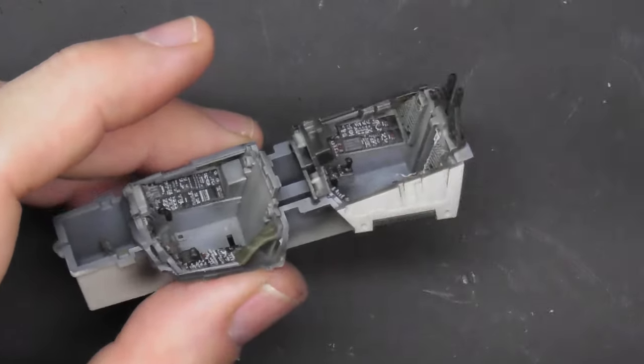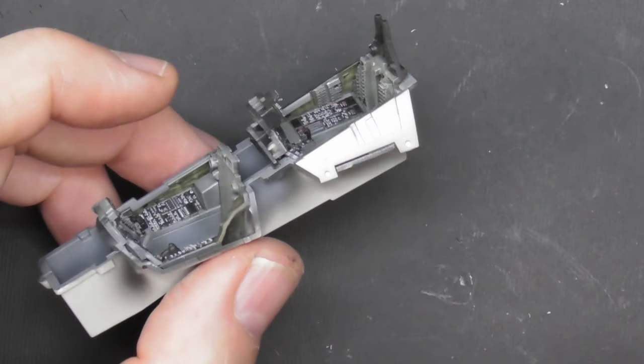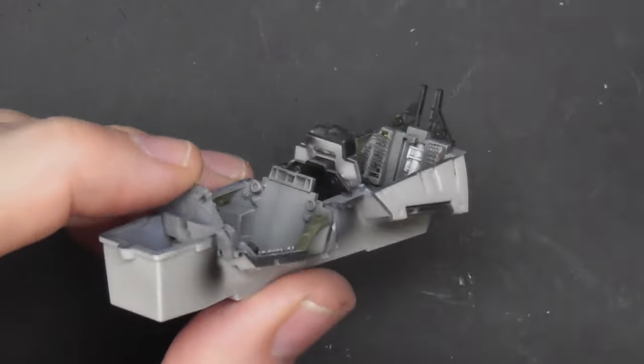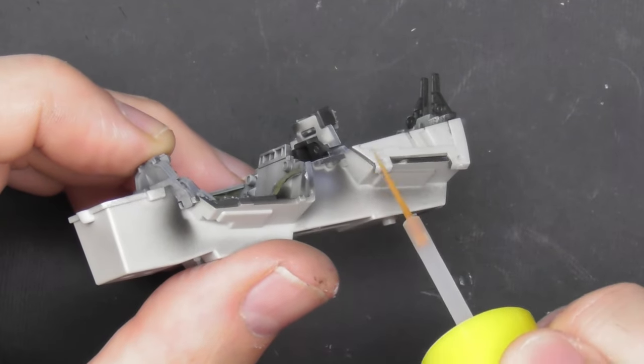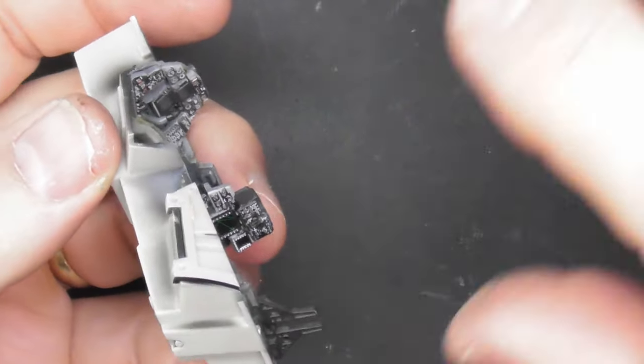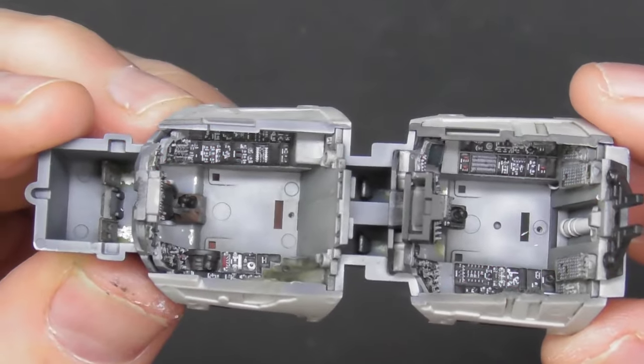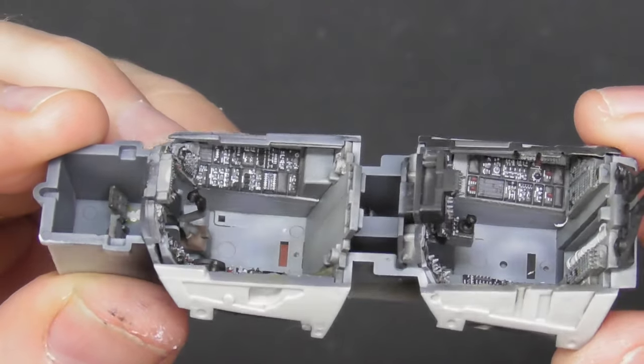And then the side walls can go in. They just simply click into place. There's no worries with the Red Fox things interfering with any fit. It all goes in lovely. And here is the finished cockpit tub.